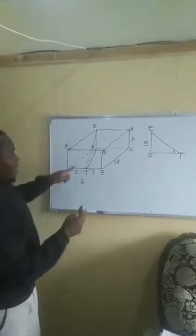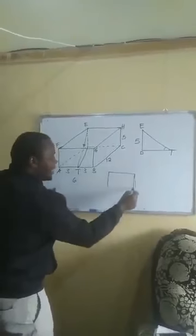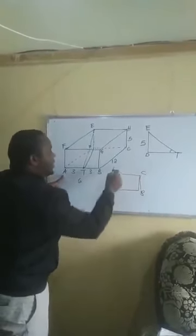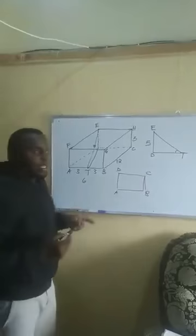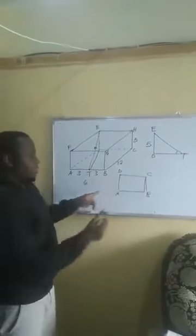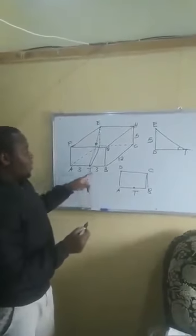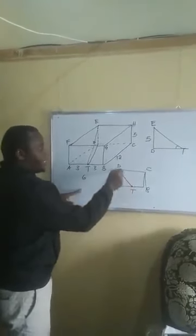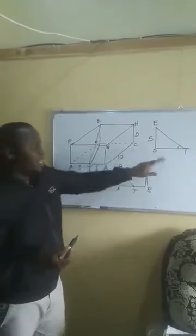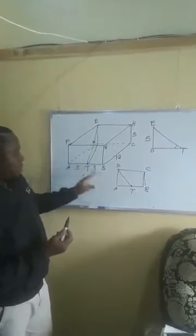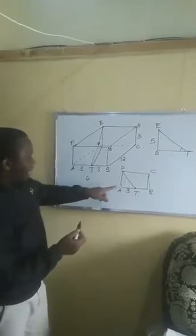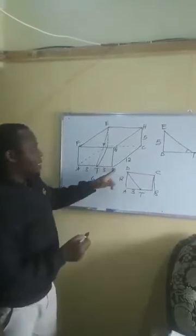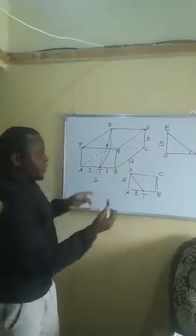Looking at the base — it is a rectangle with points A, B, C, D. Our point T is at the midpoint of AB, so T is here. The projection of TE on the base is line TD. From A to T is 3 centimeters because T is the midpoint. AD is the same as BC, so AD is also 12 centimeters.